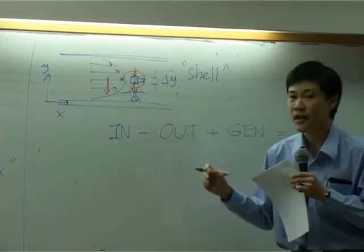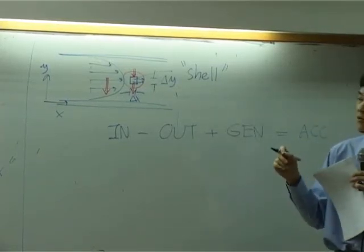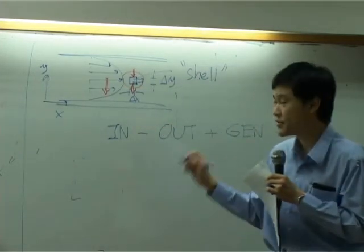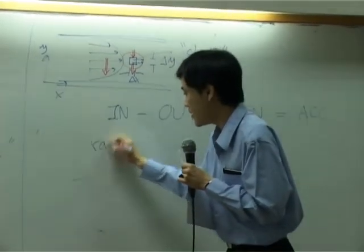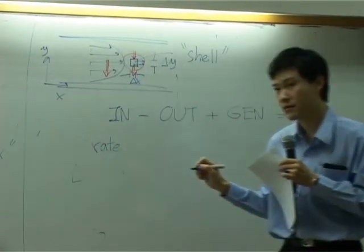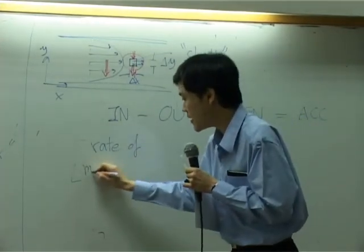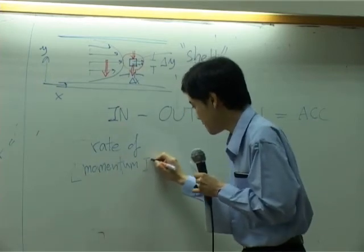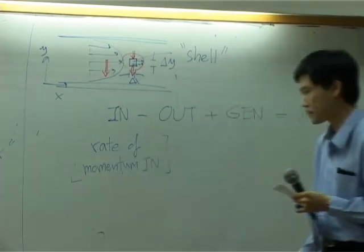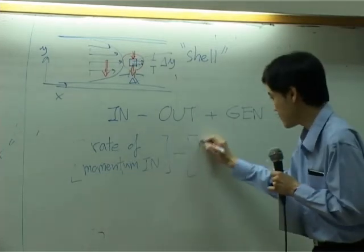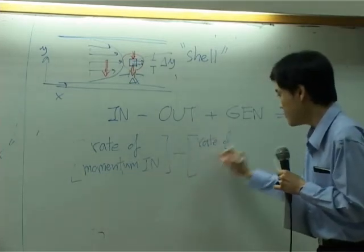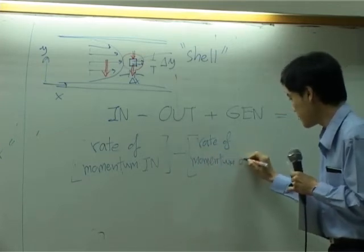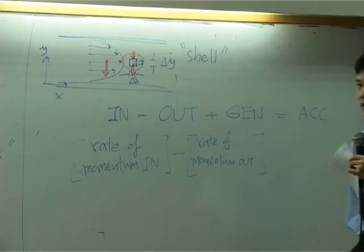However, if you take a mass bucket or energy bucket, the in here is usually represented in terms of rate. It's the rate of momentum in minus the rate of momentum out. And in here means into the shell, out is out of the shell.